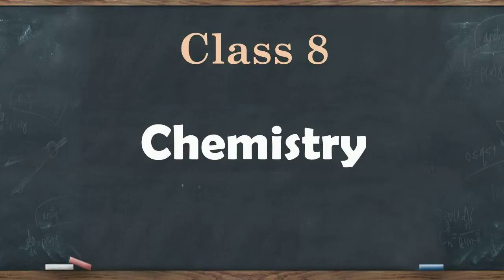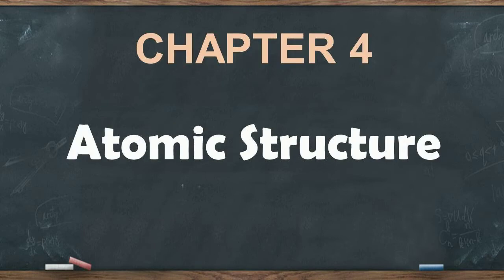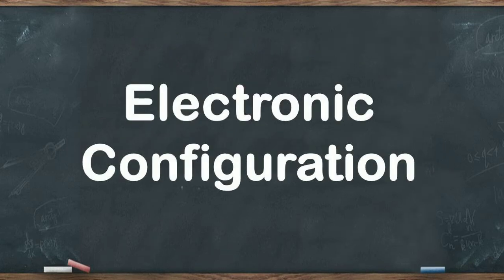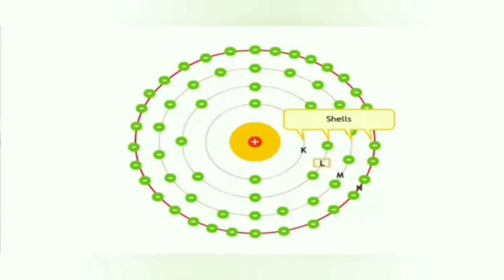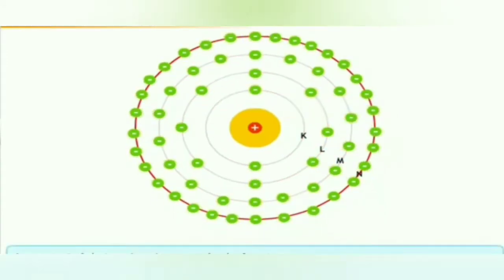Hello everyone. In this class 8 chemistry video lesson, we are going to continue chapter 4, Atomic Structure. Firstly, we will study about electronic configuration. In an atom, electrons are not randomly placed around the nucleus; they are placed in fixed energy levels or energy shells as suggested by Bohr's atomic model. These shells are named as K, L, M, N and so on. The arrangement of electrons in these shells is known as electronic configuration.